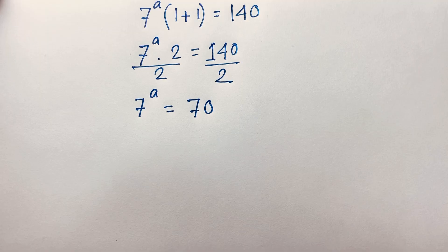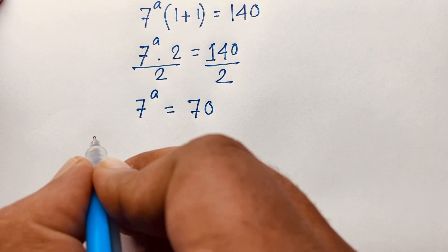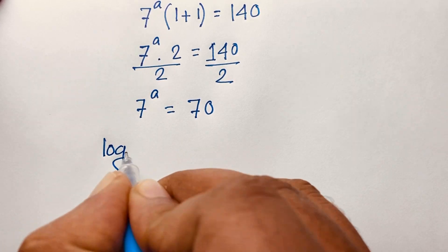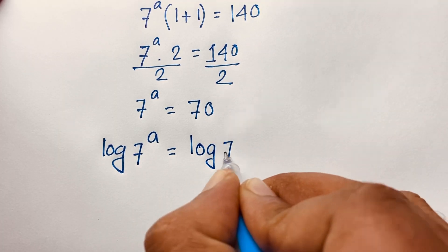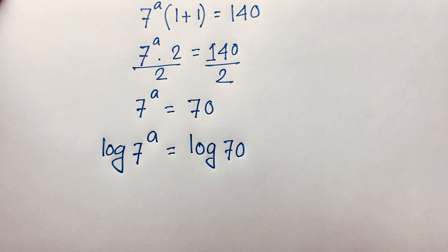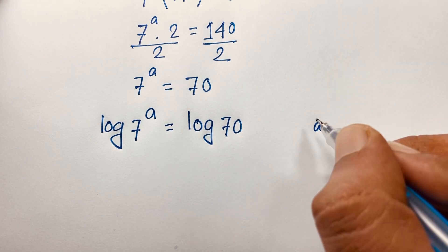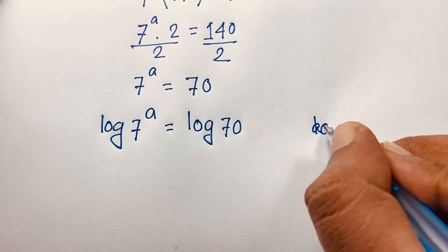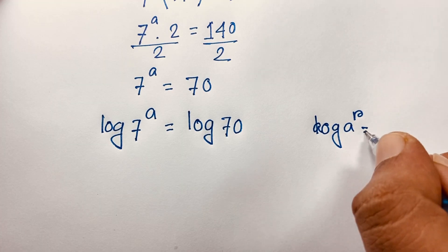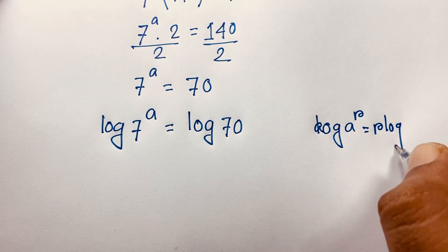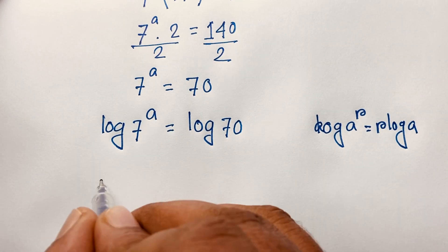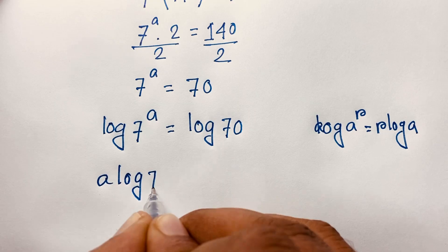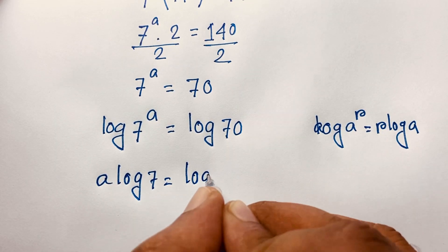Our target: a is equal to what in this exponential math problem. I apply log to both sides, so log of 7 to the power a is equal to log 70. Using the rule that log a to the power r is equal to r log a, the exponent moves in front, so it will be a log 7 is equal to log 70.